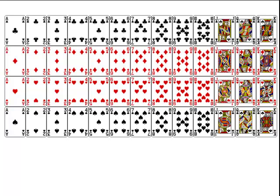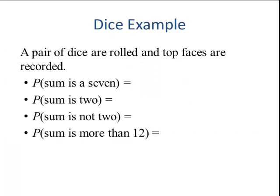Let's look at our next example. A pair of dice are rolled and the top faces are recorded. We want to know what's the probability that the sum is a 7, the sum is a 2, the sum is not a 2, and the sum is more than 12. The sum is a 7 can happen 6 ways. So we have 6 out of the total number, which is 36. Now if you need to verify this on the next slide, we will have the sample space listed out.